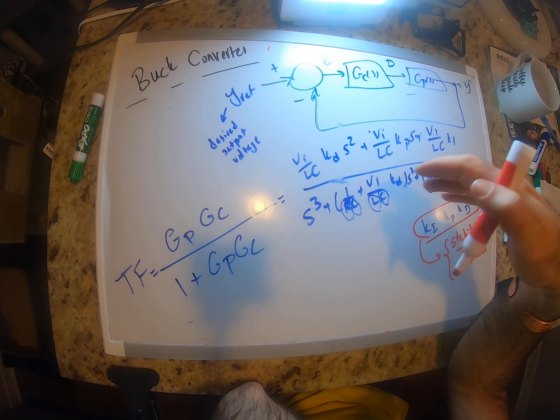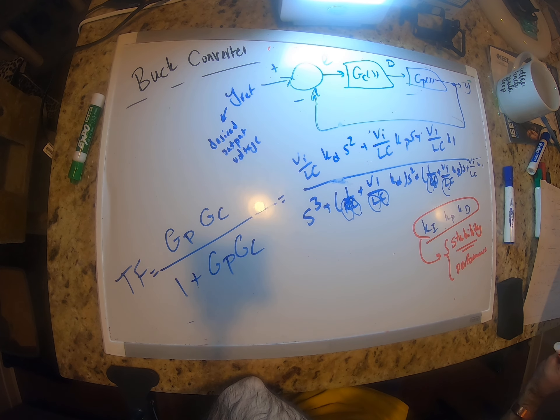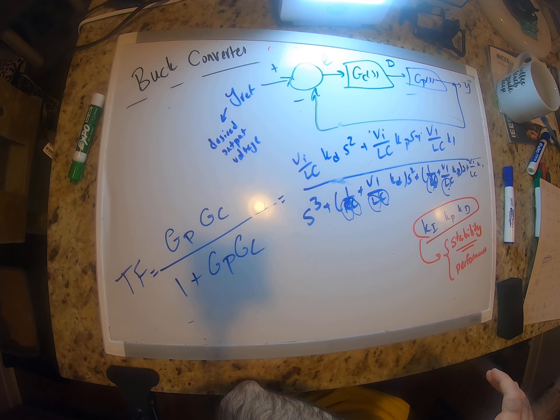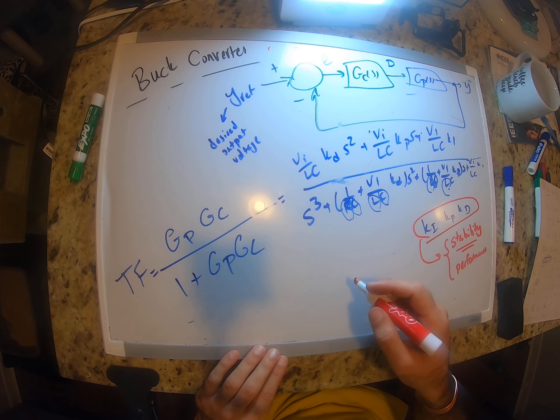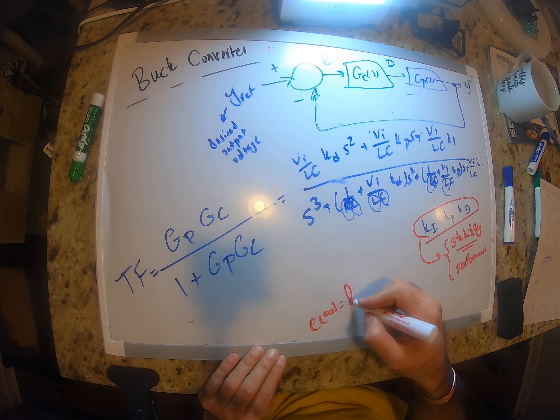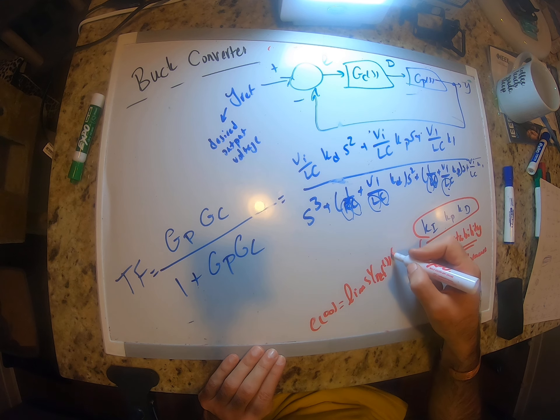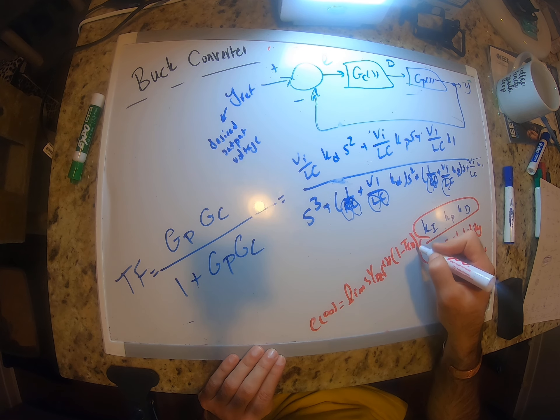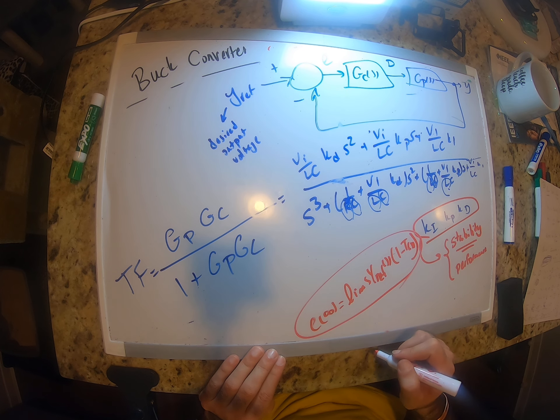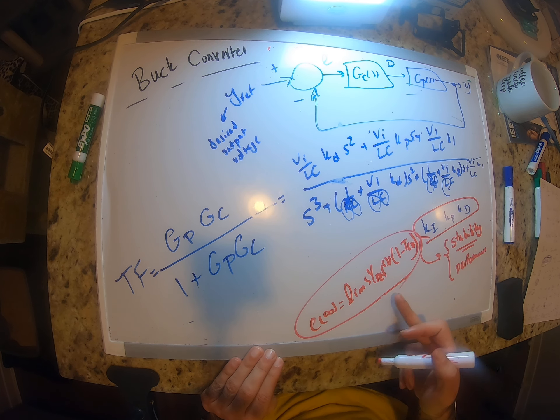So for any system now you can find actually the steady state error. How can you find the steady state error? I wrote a formula in the previous video. So e at infinity is going to be basically limit of s y_reference(s) times 1 minus T(s), right? This is what we found.